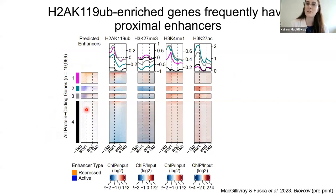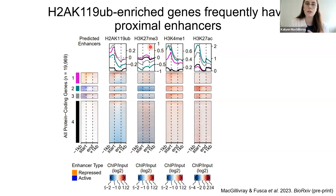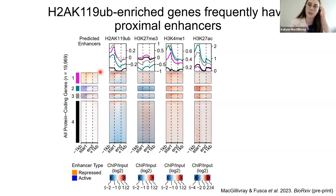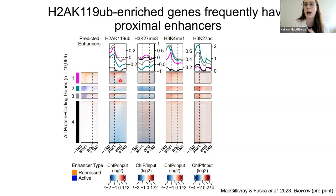To relate this H2A ubiquitylation enrichment at predicted enhancers to gene regulation, I assigned these predicted enhancers to proximal downstream genes and looked at the proportion of protein-coding genes with predicted proximal enhancers that are H2A ubiquitylation-enriched. The heatmap — showing H2A ubiquitylation, H3K27 trimethylation, H3K4 monomethylation, and H3K27 acetylation — reveals that the pattern of H2A ubiquitylation closely mirrors the pattern of predicted enhancers, particularly for repressed enhancers, which show very high enrichment of H2A ubiquitylation, supporting the association of this modification with these regulatory elements.